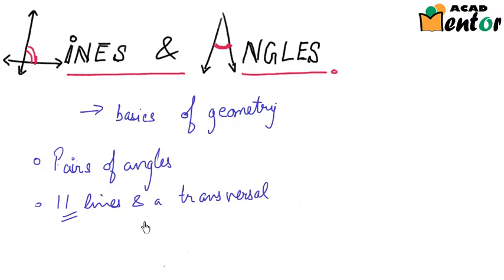Now this is the symbol for parallel lines that I will be using throughout the chapter. Then we will look at lines which are parallel to the same line. And finally, we will look at the angle sum property of a triangle.